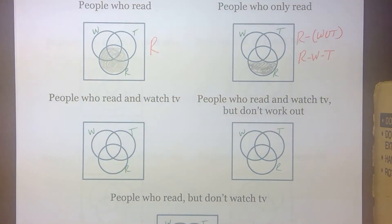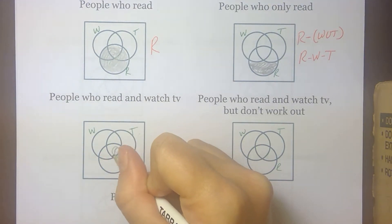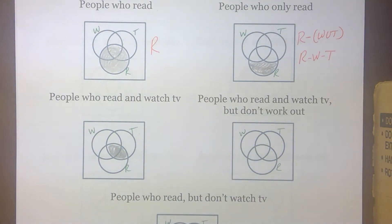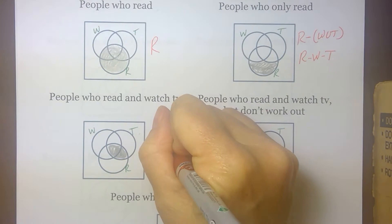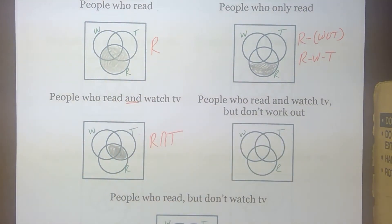What about people who read and watch TV? Well, read and watch TV. That's these two loops. And these two regions, regions 5 and 6, are both in those two loops. Notation-wise, that looks like read, intersect, watching TV. That's that key word, and.